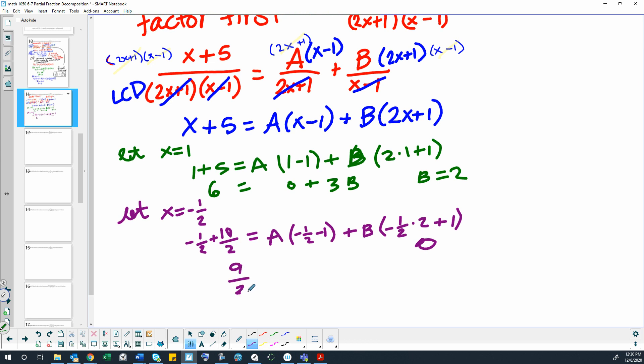9 halves equals negative 3 halves times A. So then if we divide 9 halves by 3 halves, that's the same thing as 9 halves times negative 2 thirds, because copy dot flip—multiply by the reciprocal. So 3 goes into 9 three times and 2 and 2 cancel out. So we have negative, so that should be negative 3. Is that correct?